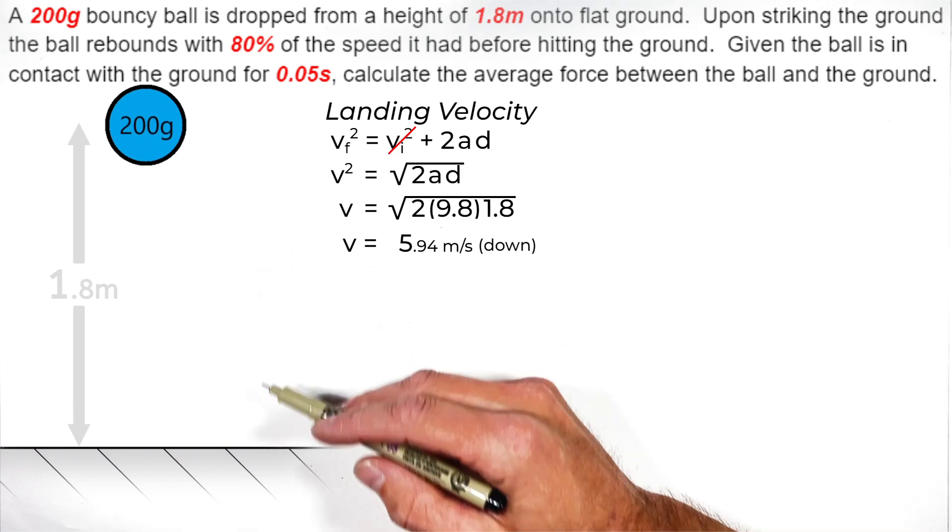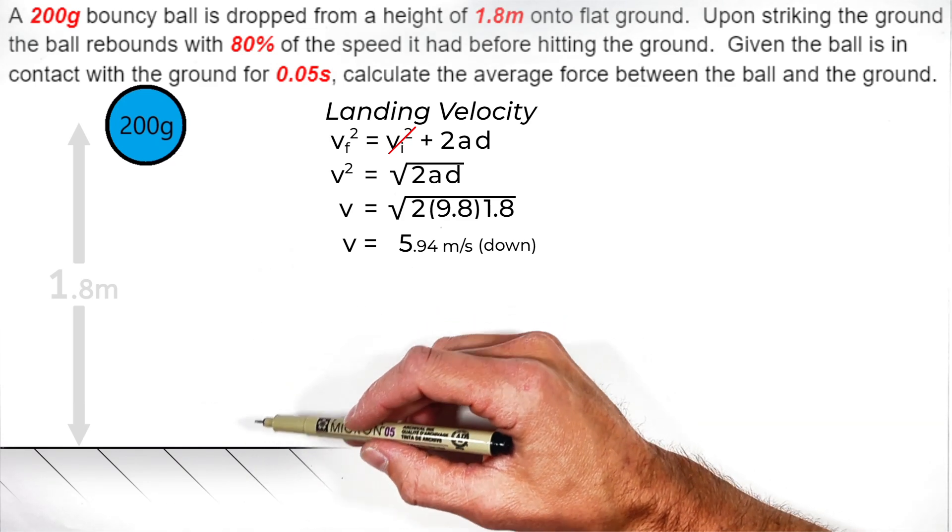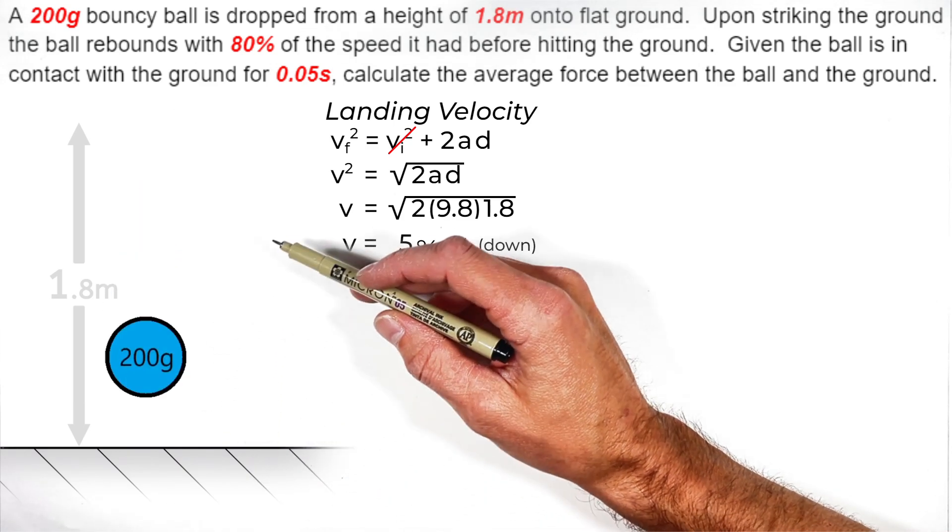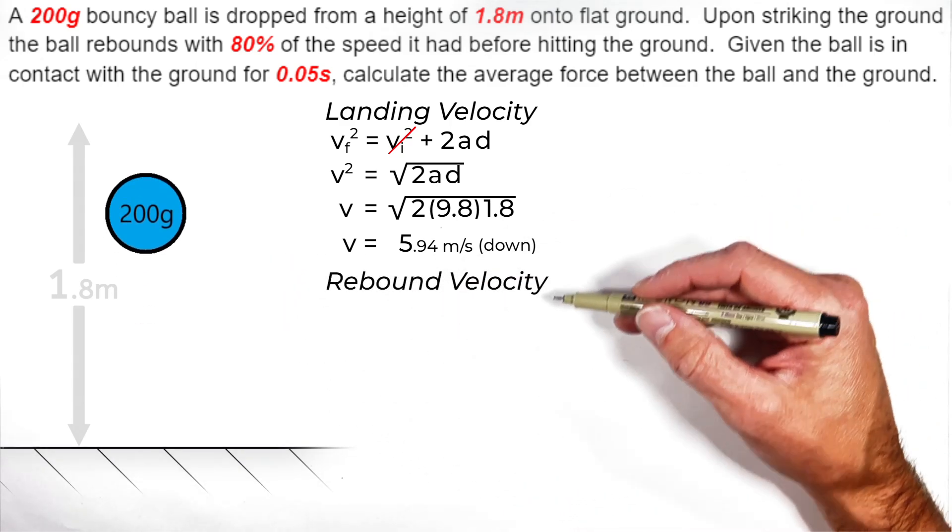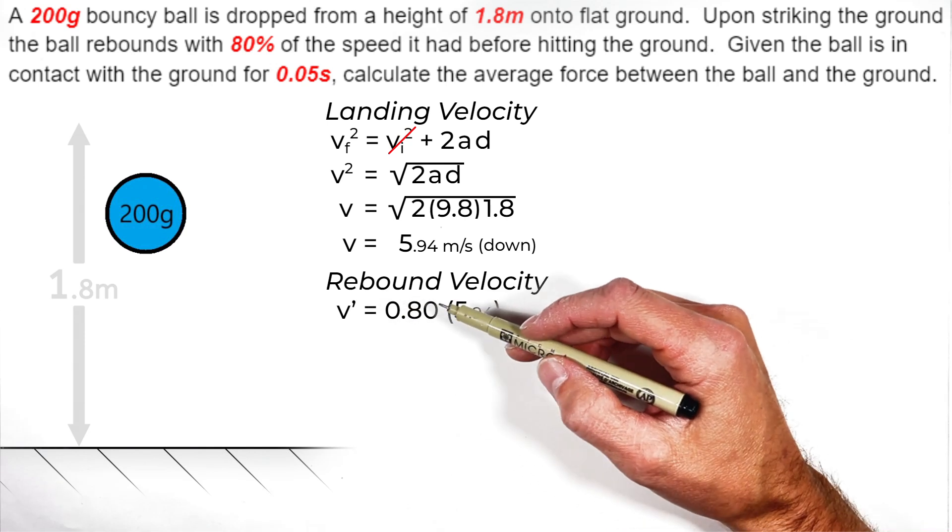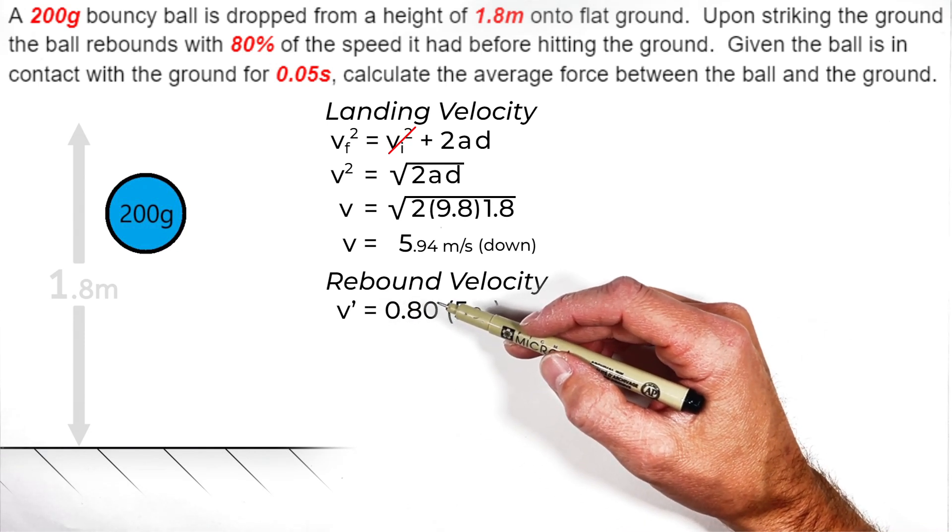Once this ball strikes the ground traveling 5.94 meters per second downward, it's going to rebound back up at 80% of its initial velocity. So solving for the rebound velocity, I'm just going to call that V prime because it's the velocity after this collision.